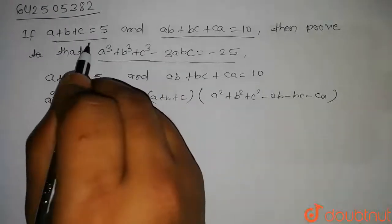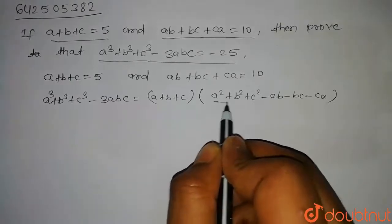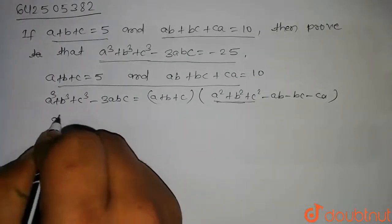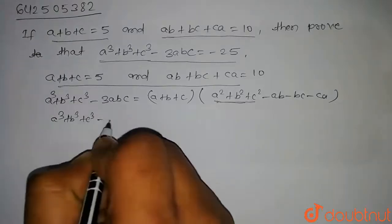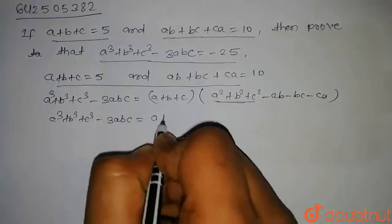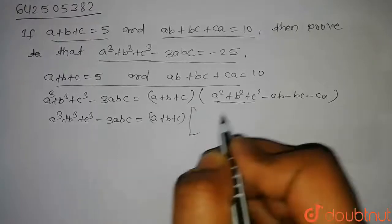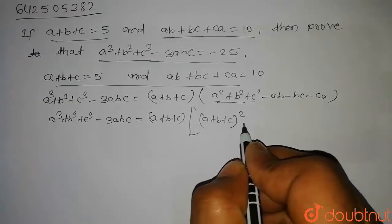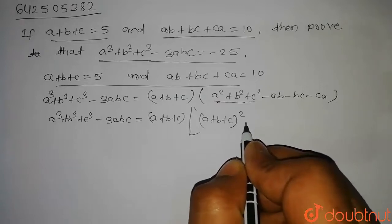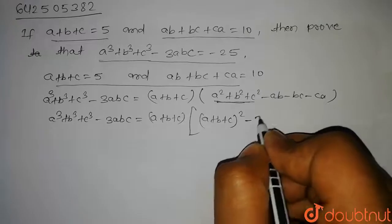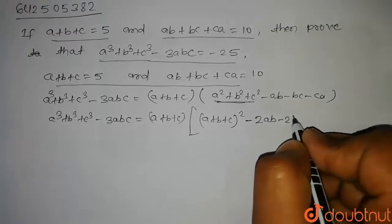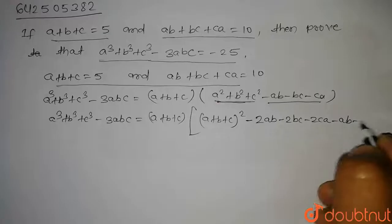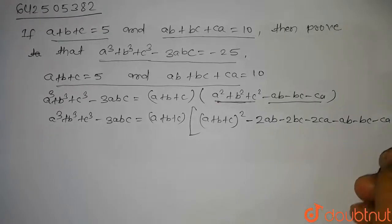In this question we have not been given the value of a² plus b² plus c², so let us try to write it in terms of the given values. We can write a² plus b² plus c² as (a plus b plus c)² minus 2ab minus 2bc minus 2ca. Then, combining with the minus ab minus bc minus ca terms, we get minus 3ab minus 3bc minus 3ca.